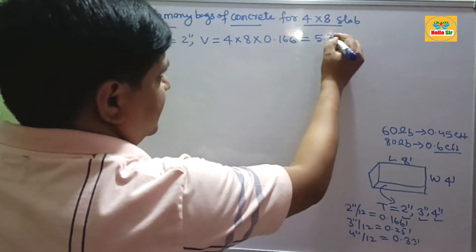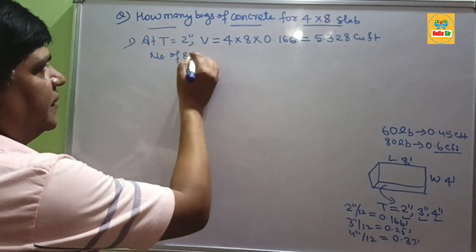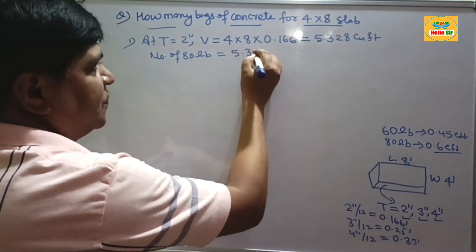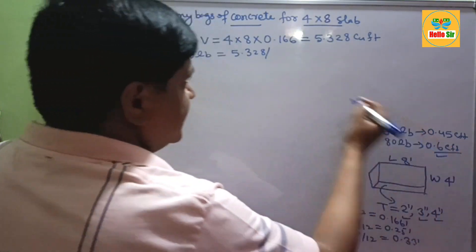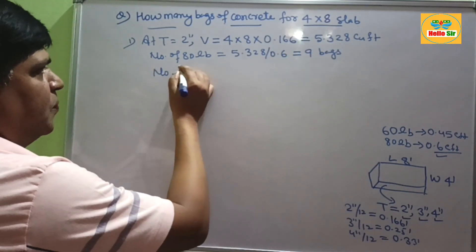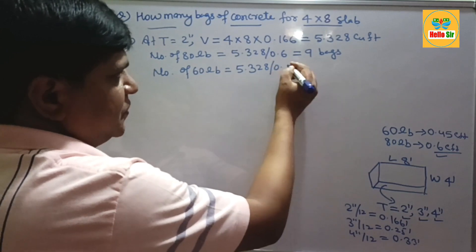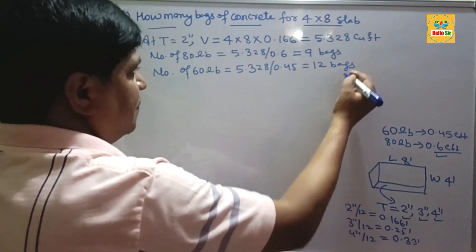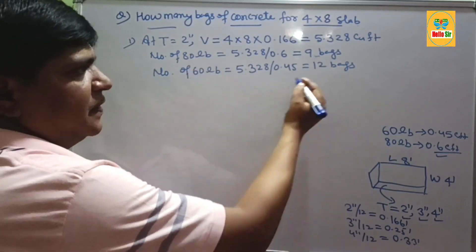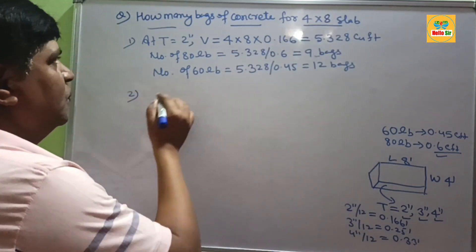This comes out to about 5.328 cubic feet. If you want to find out the number of 80 lb bags of concrete, simply divide 5.328 by 0.6 — the yield of one 80 lb bag — and it becomes about 9 bags. And if you want to calculate the number of 60 lb bags, divide 5.328 by 0.45, which comes out to about 12 bags of concrete. So at 2 inch thickness, you will need about 9 bags of 80 lb or 12 bags of 60 lb concrete for a 4x8 slab.